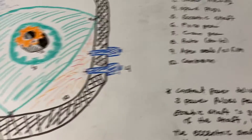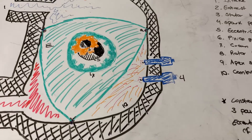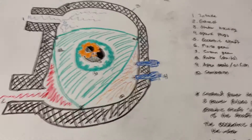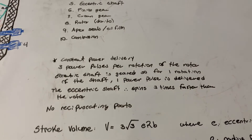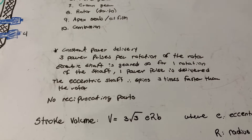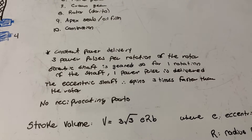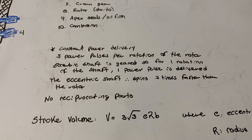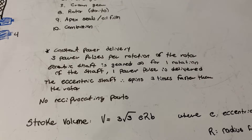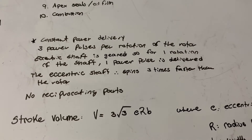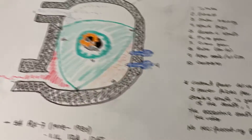Number ten is just your combustion chamber. Rotary engines have a constant power delivery — three power pulses per rotation of the rotor. The eccentric shaft is geared so that for one rotation of the shaft one power pulse is delivered to the eccentric shaft, therefore it spins three times faster than the rotor.